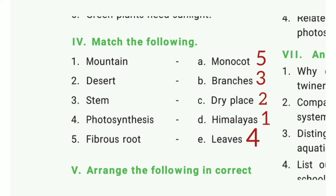Match the following: First, mountain — the answer is coniferous layers. Second, desert — the answer is dry place. Third, stem — the answer is branches. Fourth, photosynthesis — the answer is leaves.